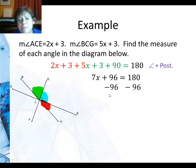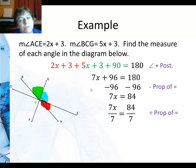Subtract 96 from both sides using the subtraction property of equality. And I get 7x equals 84. Well, then I divide both sides by 7 using the division property of equality. And I get x is 12.